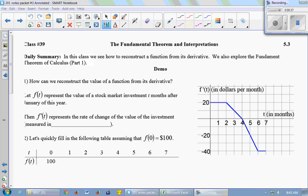What would the units be in the rate of change of the value? Dollars per month because we're measuring time in months. So let's quickly fill in this table, assuming that f(0) is $100. We're going to assume that the value of our investment at time 0 was $100.